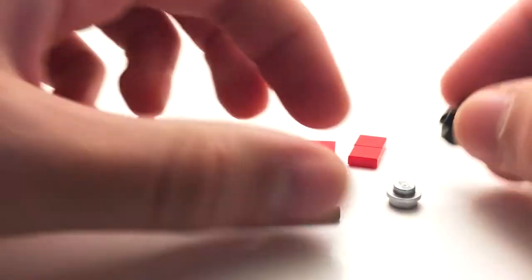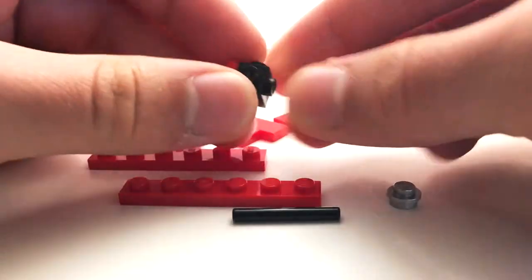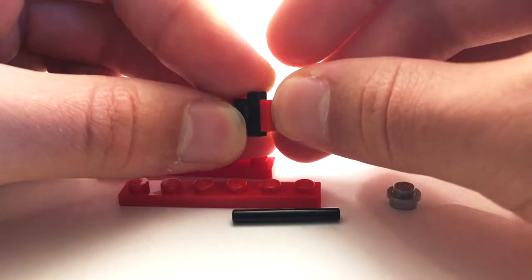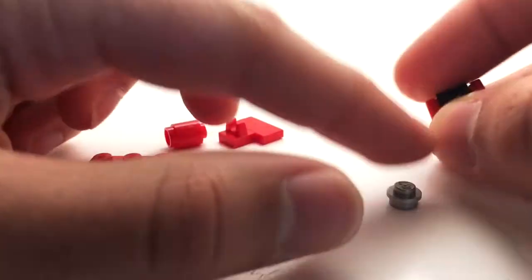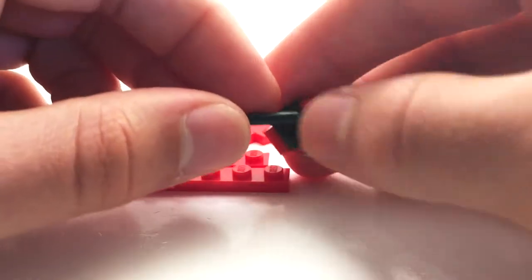This model centers around this one by one with studs on all four sides. The sides of the plane are just these nice one by one tiles. The propeller in front is this silver one by one round brick.